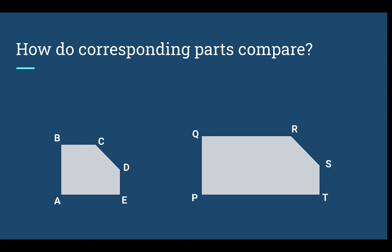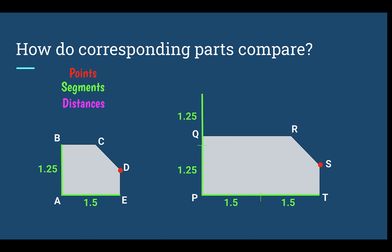Now let's look at two shapes that are clearly not scale copies of each other — PQRST is definitely stretched wider. Points are still in the same location, but we can't really use points to determine if things are scale copies. Checking segments and distances: the original is 1.25 tall and 1.5 wide. The copy is 1.5 wide times two, so if this were a scale copy everything should be multiplied by 2 — but 1.25 times 2 goes off the shape. The distance of 1.54 times 2 doesn't reach point R like it should.